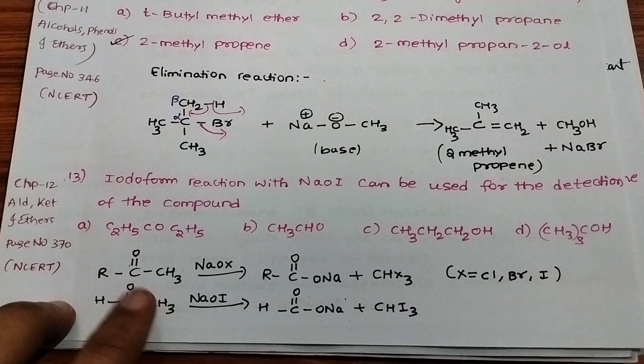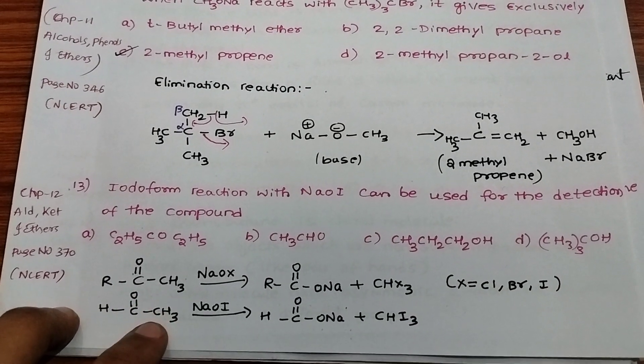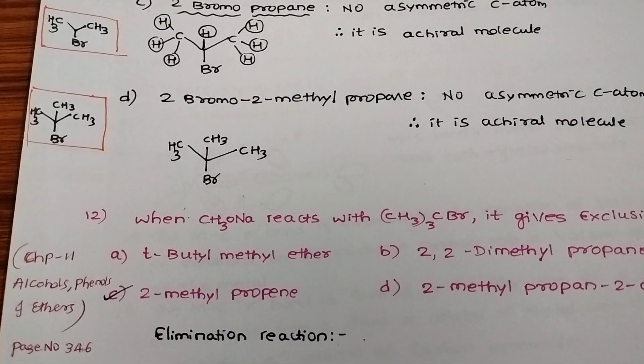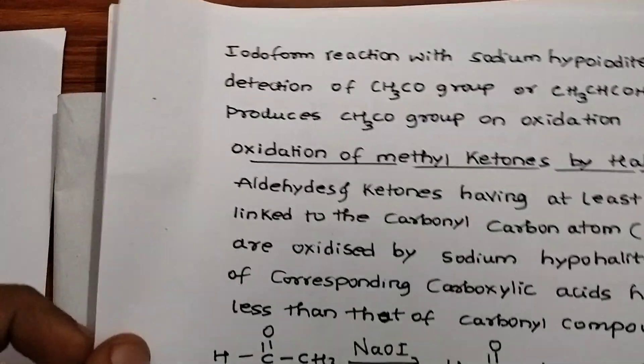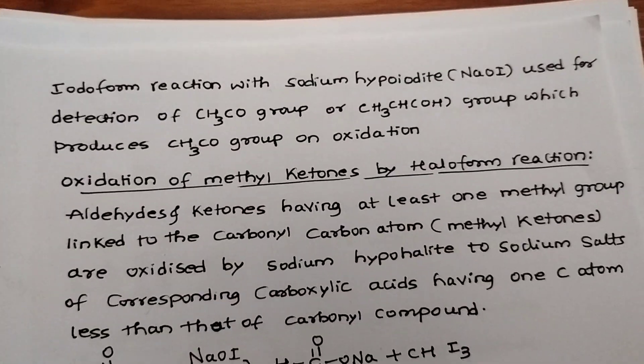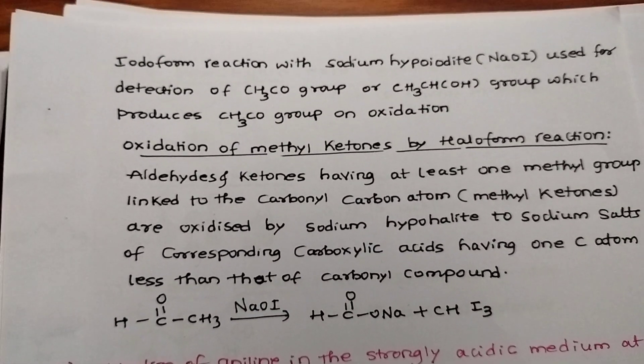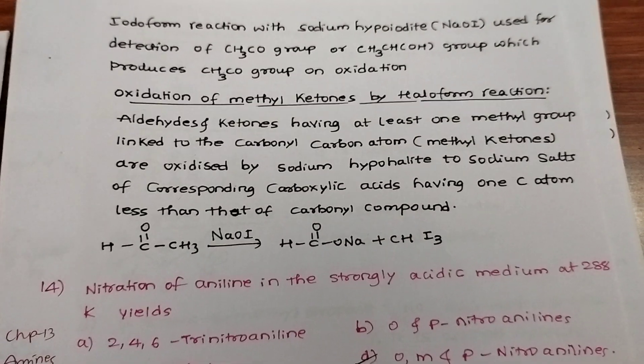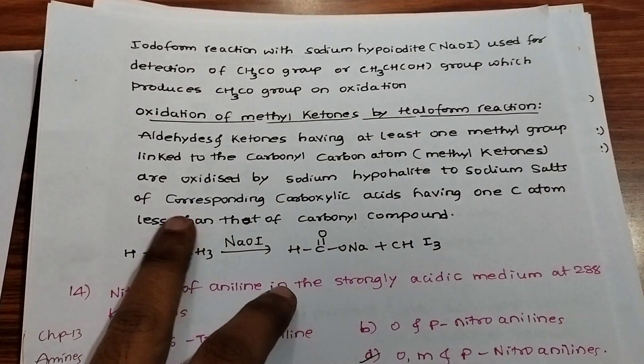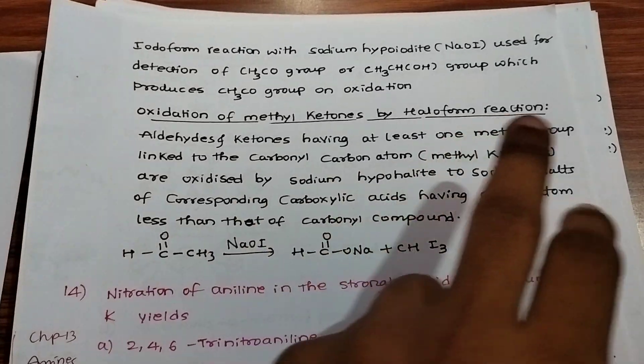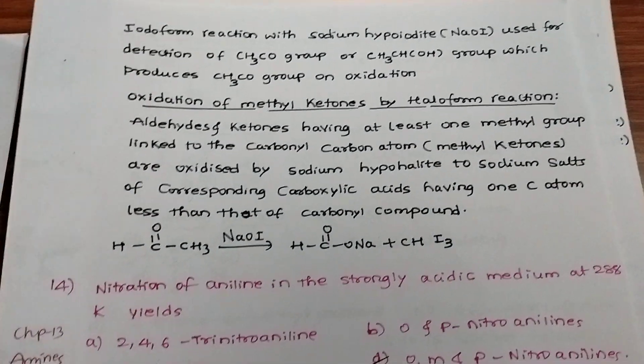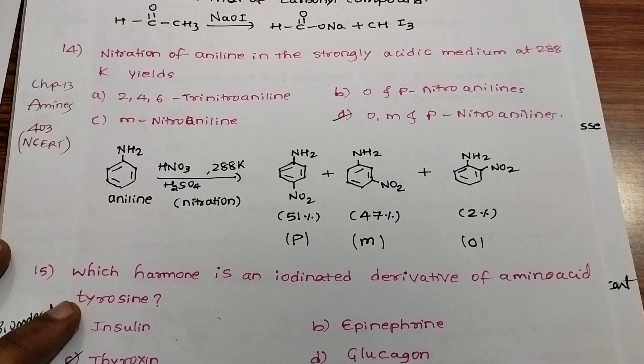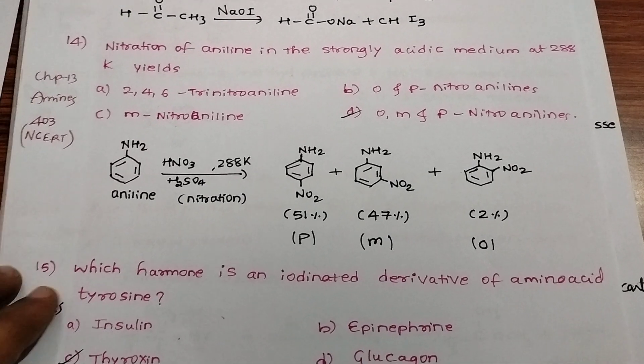The answer is acetaldehyde. Iodoform reaction with sodium hypoiodite is used for detection of methyl carbonyl group, which produces CH3CO group on oxidation. Example is ethanol plus water. Nitration of aniline in strongly acidic medium yields all three ortho, meta, and para-nitroanilines.